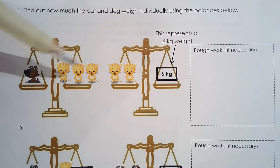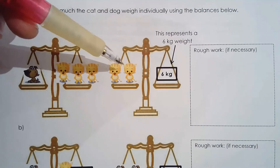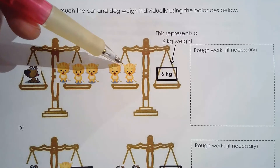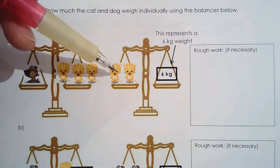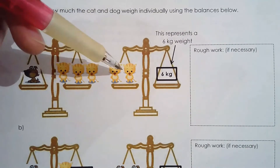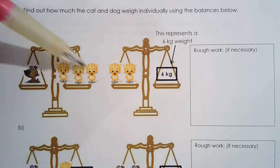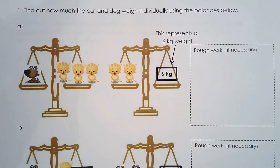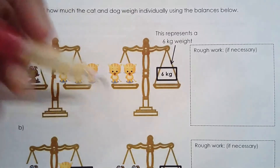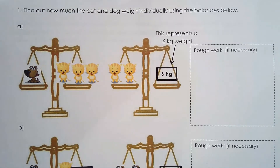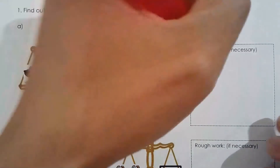If two cats is six kilograms, then one cat is three kilograms. And if one cat is three kilograms, then the dog must be nine kilograms. So cat is three kilograms and dog is nine kilograms.